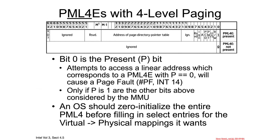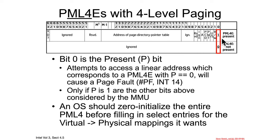What's inside the page map level 4 entry? It could look like two things. The first and most important bit is the present bit. If the present bit is equal to 0, then all the other bits are just ignored, and any attempt to translate a linear to virtual address that hits one of these entries with present = 0 will cause a page fault, interrupt 14. It might be recoverable, it might not be — we'll talk about that later. Only if present is equal to 1 are any of the rest of these bits actually interpreted by the memory management unit.